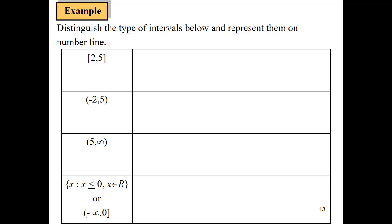Hi everyone, so today we're going to learn how to represent intervals on number line. If we have this kind of question, 2 until 5, and it's in square bracket, so it is called a closed interval.